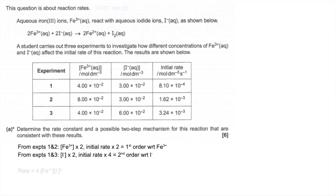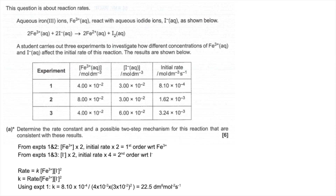So now we can write the rate equation: rate = k[Fe³⁺][I⁻]². Rearranging to solve for k: k = rate / ([Fe³⁺][I⁻]²) — don't forget the I⁻ is squared. Using experiment one, putting all the numbers in gives a value for k of 22.5, with units dm⁶ mol⁻² s⁻¹.